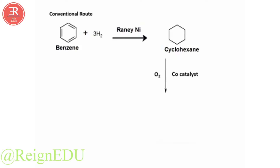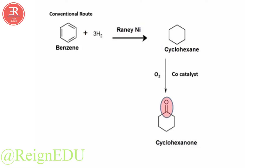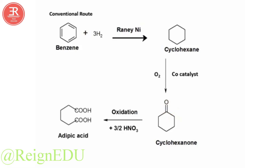Cyclohexane is then treated with oxygen in the presence of cobalt as a catalyst, where oxidation is carried out and cyclohexanone is obtained. It is then oxidized in the presence of nitric acid, and a bond-breaking process takes place. That is how we get the final product, which is adipic acid.